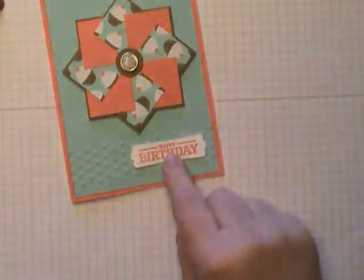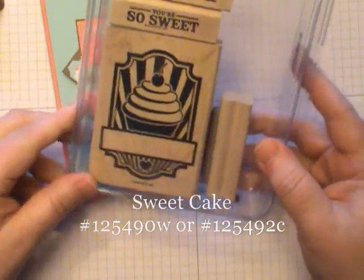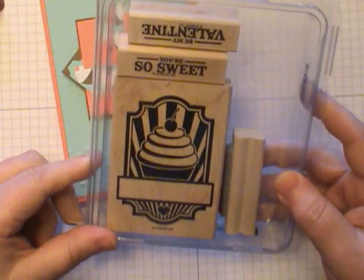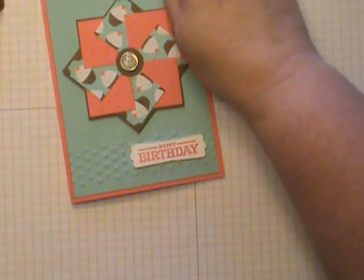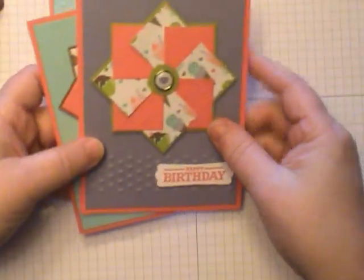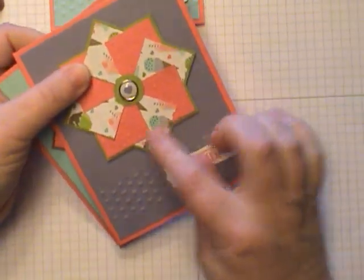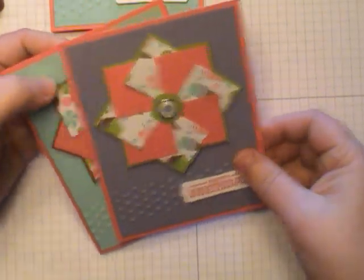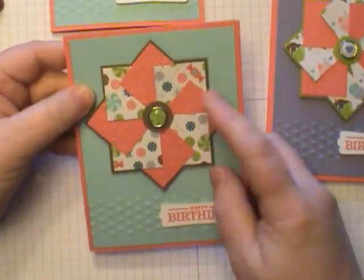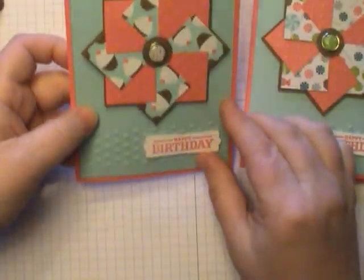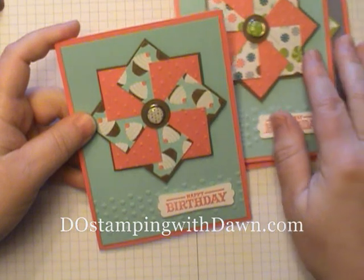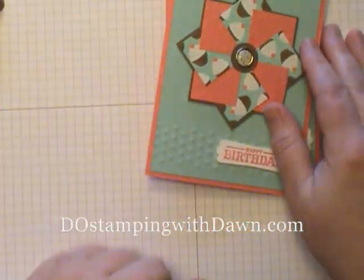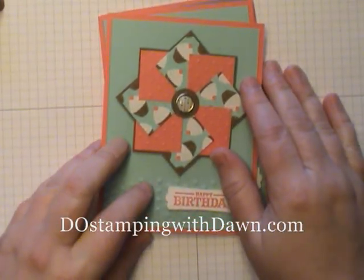I've added a greeting here and that was done with the Sweet Cake stamp set from the Stampin' Up 2012 Occasions Mini. I also have a couple other designs here using some of the other pattern paper. It's so cute but I have to admit I think the Cupcakes is my favorite. So I hope you enjoy making your own faux pinwheel cards and be sure to stop by my blog at DoStampingWithDawn.com.